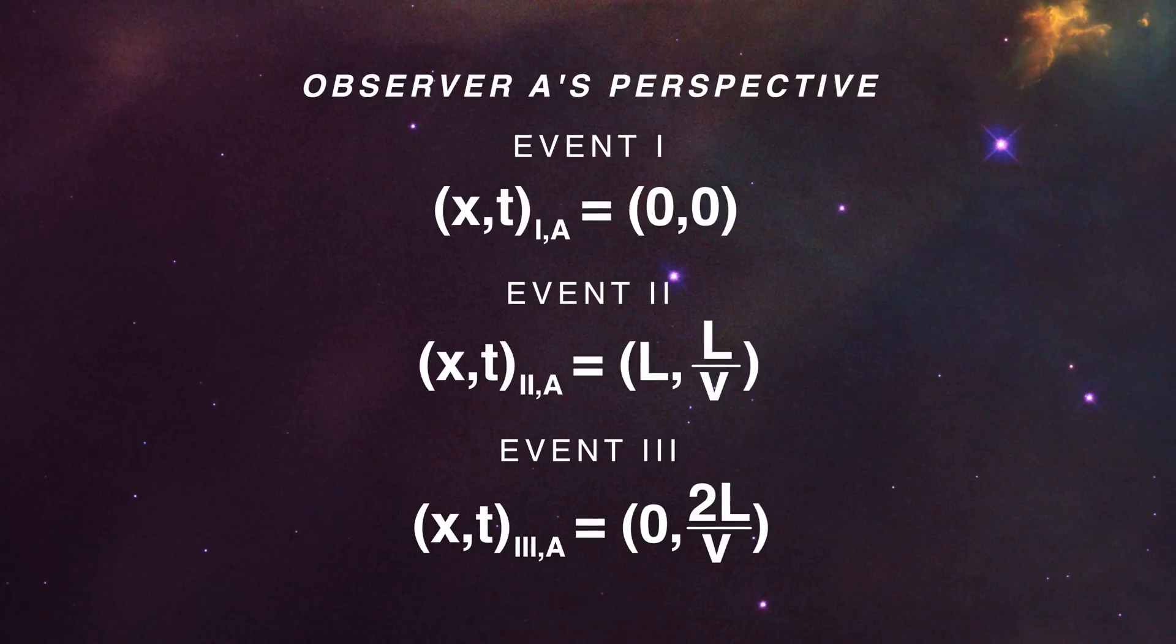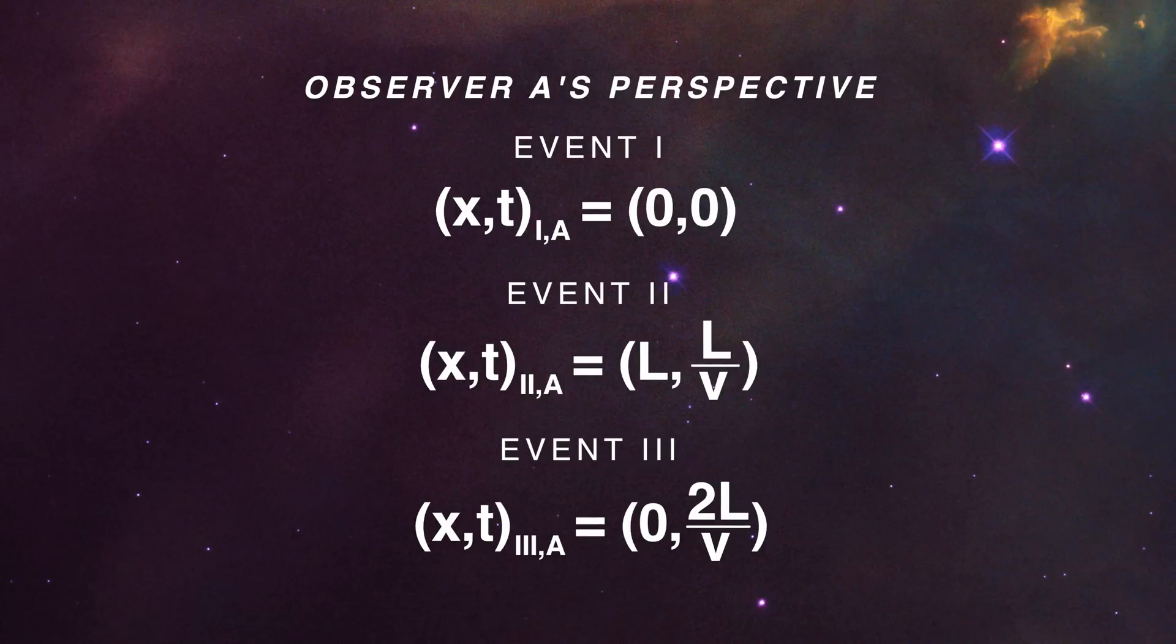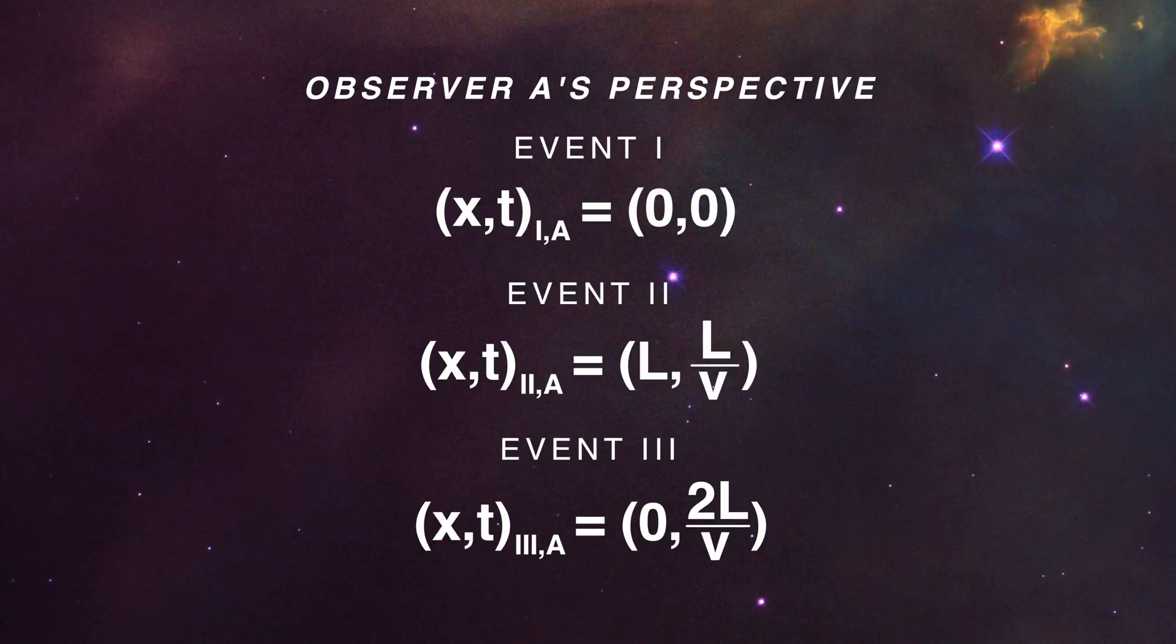We can write those three important locations according to observer A as we see here. The space and time coordinates for A are 0, 0 for event one, L, L over v for event two, and finally 0, 2L over v for event three. If you need to take a moment to work this out, go ahead and pause the video until you're comfortable with what I've said.